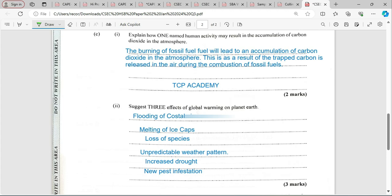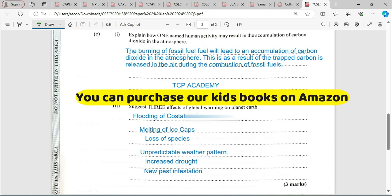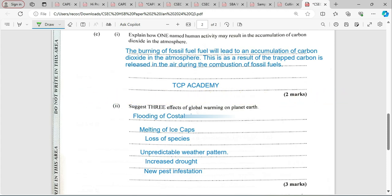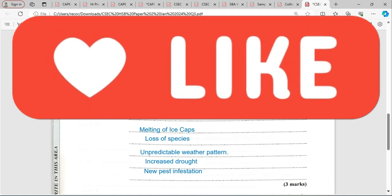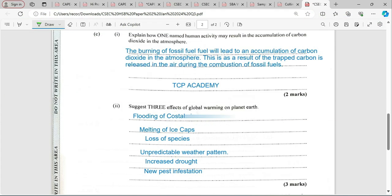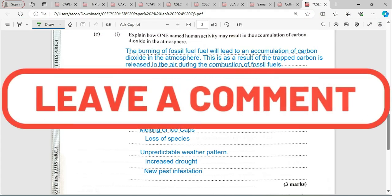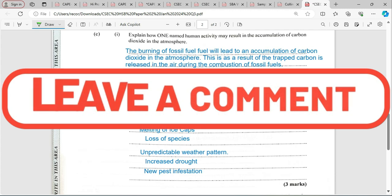Loss of some species as they cannot tolerate the change in weather conditions. You're going to have unpredictable weather patterns, increased drought, and new pests will turn up in areas where they usually are not. This area now forms a favorable condition that is more hospitable to that pest, so you're going to be finding them in these areas.